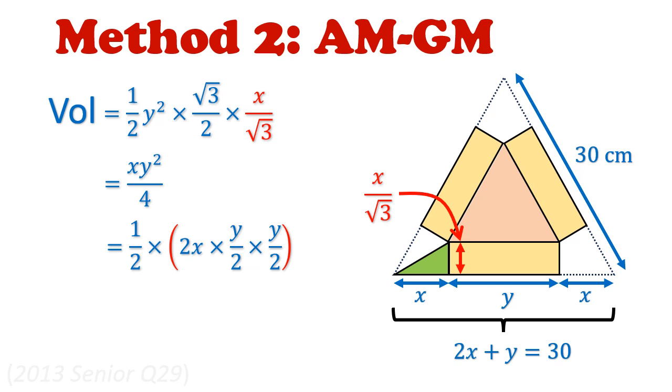So these three factors represent the cube of the geometric mean, and it is less than or equal to the cube of its arithmetic mean. The arithmetic mean will be the sum of those three terms, (2x plus y/2 plus y/2) over 3. This is nice because in the numerator, 2x plus y is equal to 30. So we can simplify this, and we'll get an upper bound of 500.